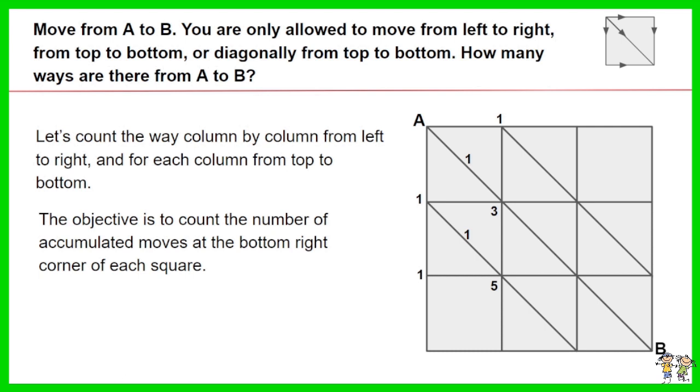Next for the middle square of the left column. The accumulated ways at the bottom right corner is 5, as it includes the 3 ways from the top square.